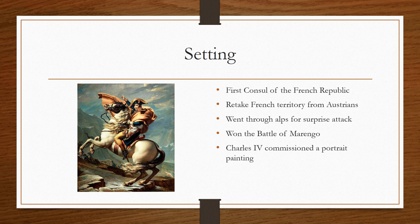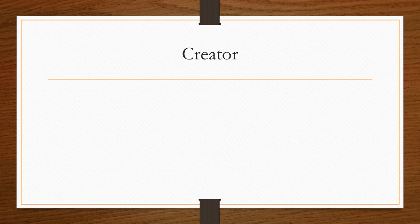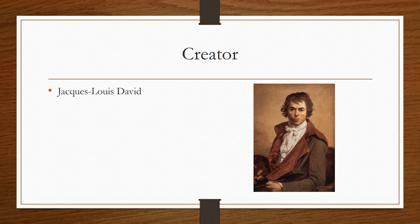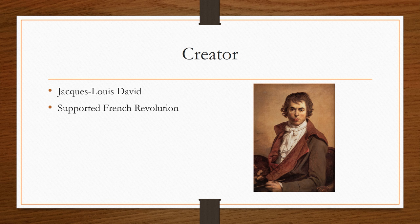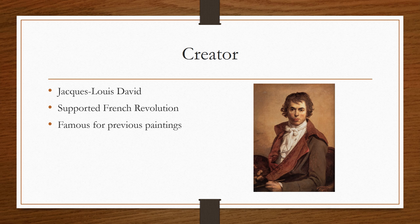After the victory, Charles IV gave some gifts to Napoleon, and one of those was to have a portrait of himself made. The creator of this painting is Jacques-Louis David, and he was a strong supporter of the French Revolution. He gained a lot of notoriety and fame for having many of his previous paintings centered around the French Revolution.